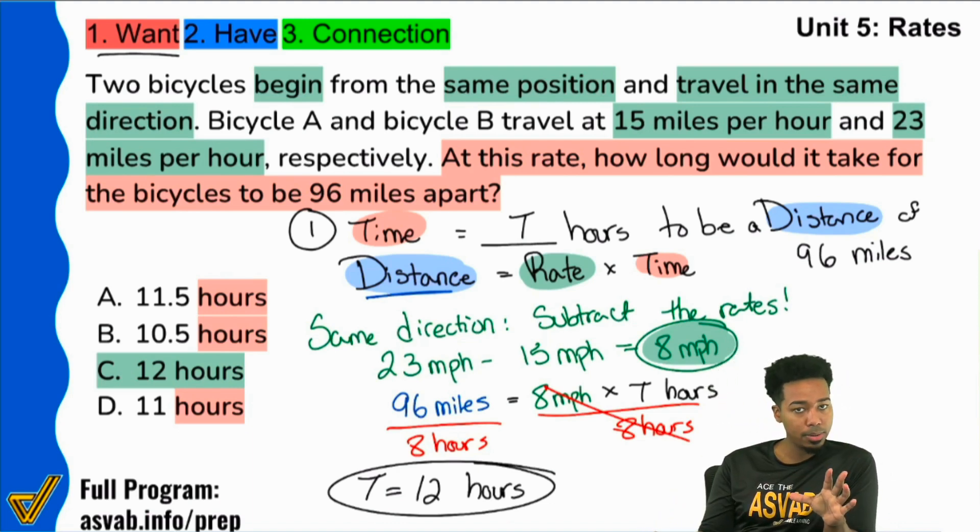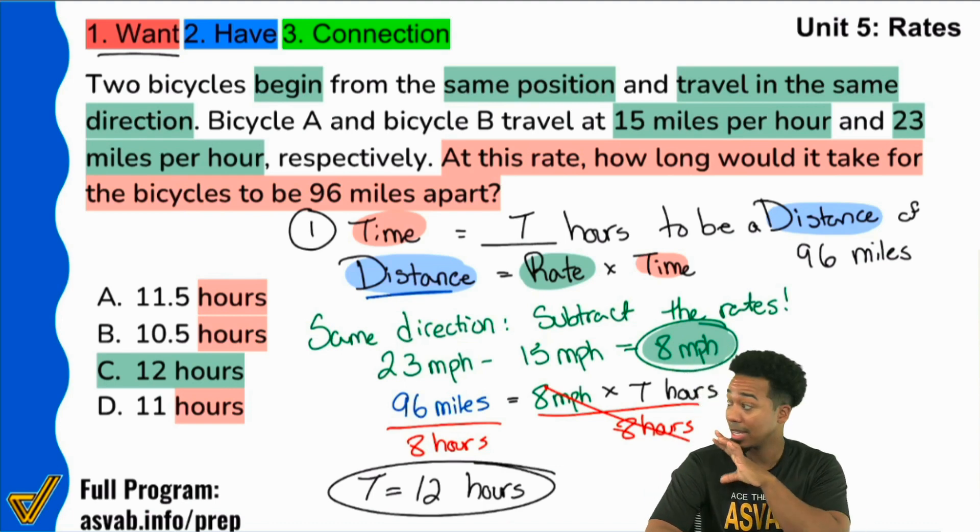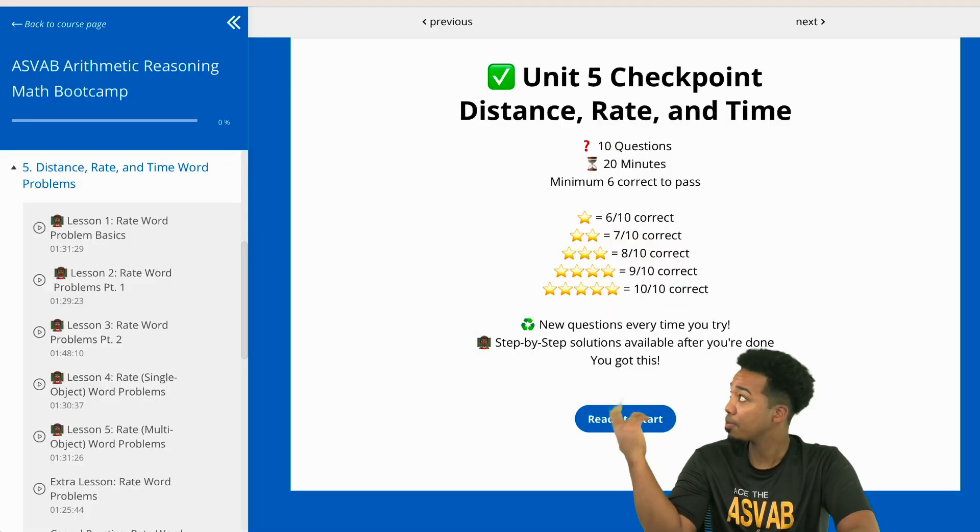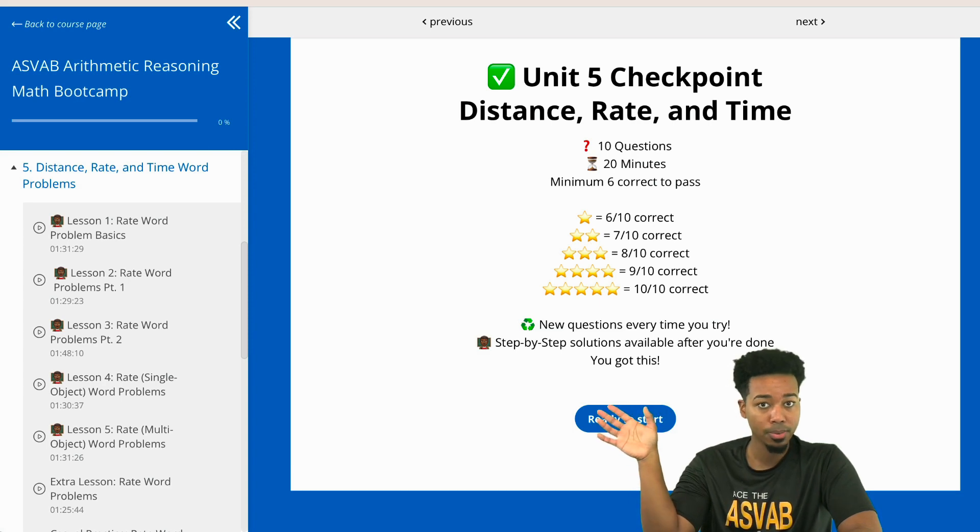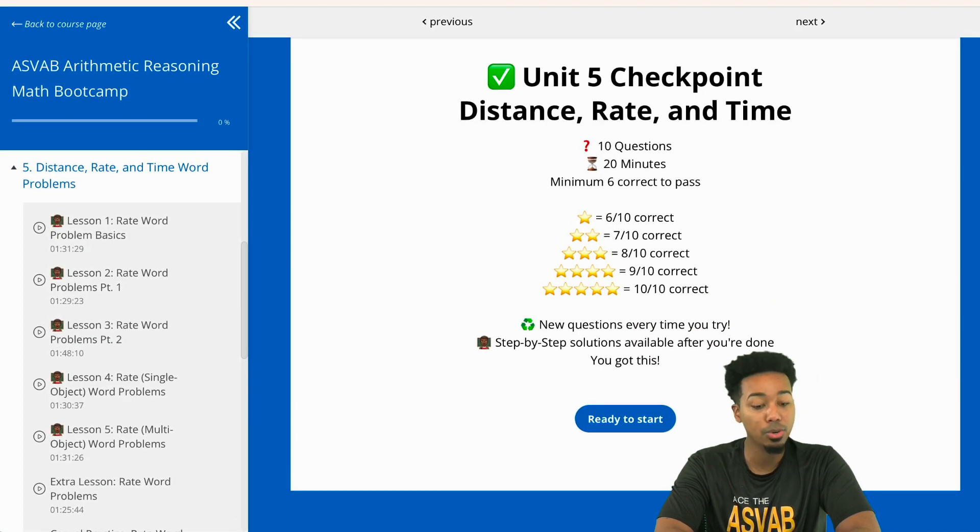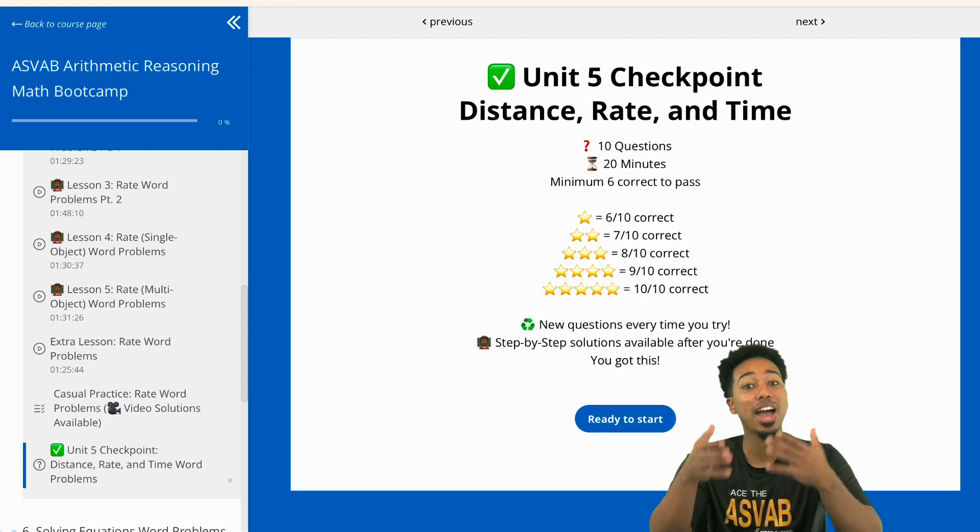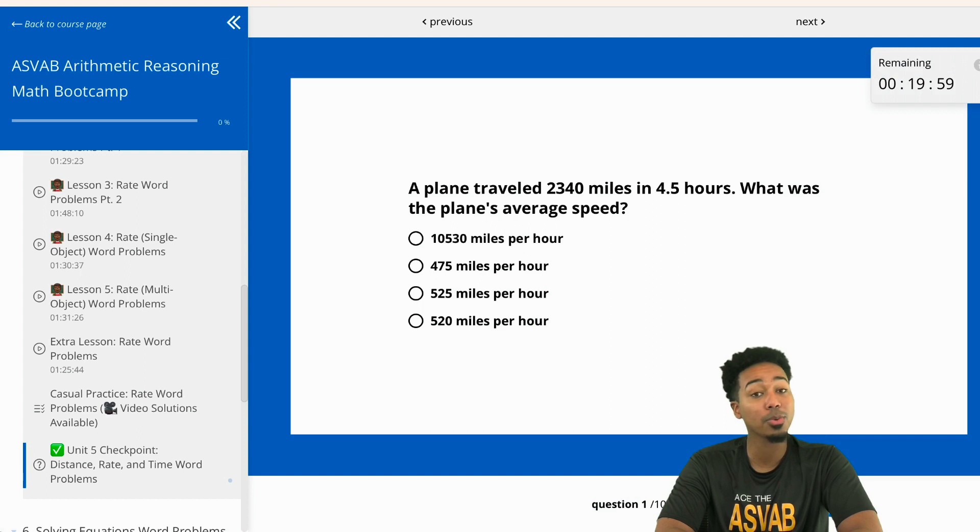As promised, my party people, you're here at the end of the video and let me show you where to go to get more practice that's going to guarantee you're good to go, because you have problems where you're going in the same direction, opposite directions, toward each other, catching up—different scenarios with different events. There's so many different types of rate word problems that you need to make sure you're not trying to memorize. If you look behind me, you're going to see the Arithmetic Reasoning Math Boot Camp inside your dashboard. If you are in my program, all you need to do is open up your Arithmetic Reasoning course, go to unit five, and you'll see you have lessons, extra practice, casual practice with video solutions, and best of all, you're going to have a unit checkpoint that's going to basically certify that you're ready to tackle rate word problems on the actual ASVAB.